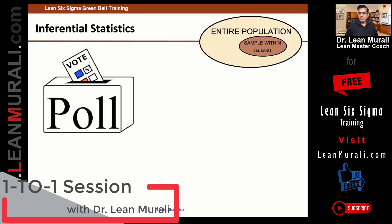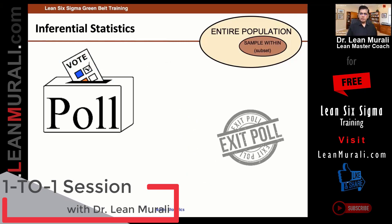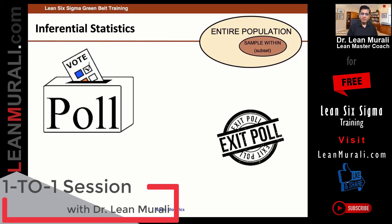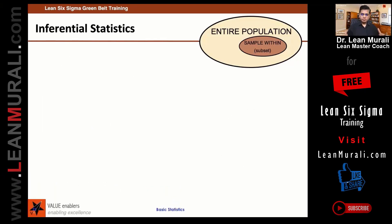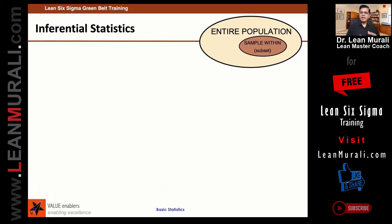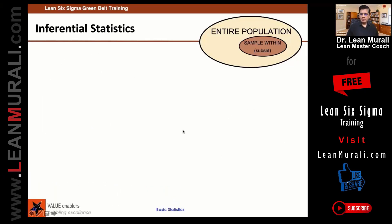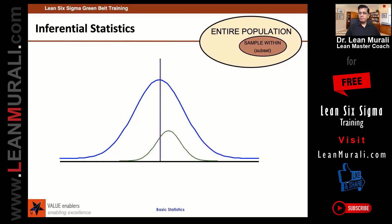Election polls, exit polls — is it possible to take the exit polls from everyone? No. So you have to take a sample. So if you see the population, that will also form a distribution like this. The sample will also form a distribution like this.